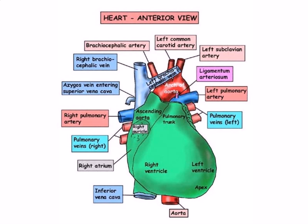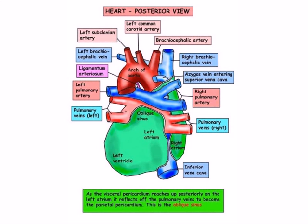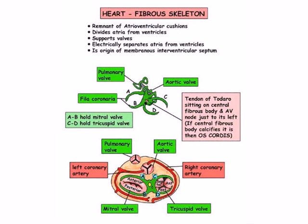The interventricular septum bulges to the left as the left ventricular wall is much thicker — about a centimetre — than the right ventricular wall, which is nearer 3–5 millimetres. The septum also lies somewhat obliquely across the heart, almost in the coronal plane, so that the anterior surface of the heart is about two-thirds right ventricle and one-third left ventricle. On the inferior or diaphragmatic surface these proportions are reversed: two-thirds left ventricle and one-third right ventricle.